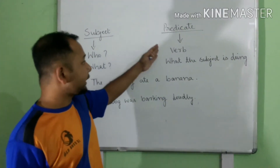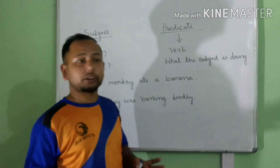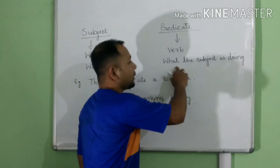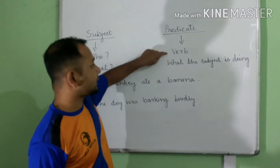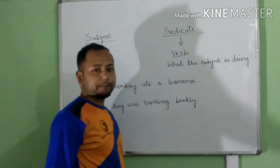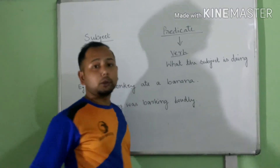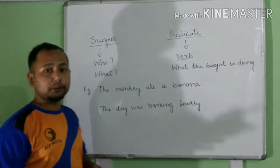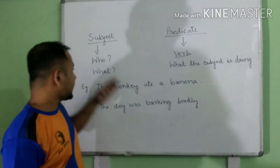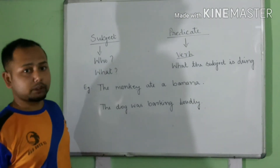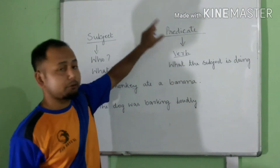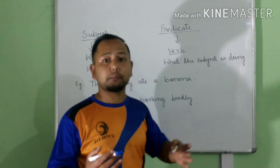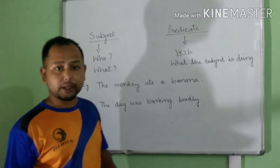There is another way to identify the subject and predicate. Predicate always contains a verb and tells us what the subject is doing. To identify the subject, we ask who or what; and the predicate tells us what the subject is doing.